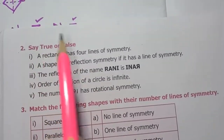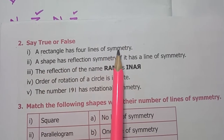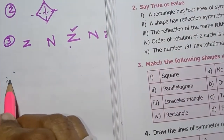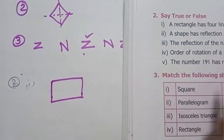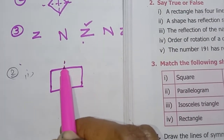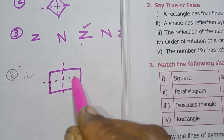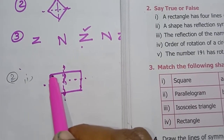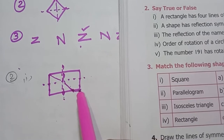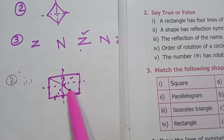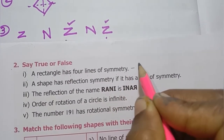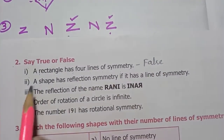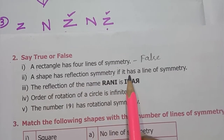Second section: say true or false. First one: a rectangle has four lines of symmetry. Looking at the rectangle — if you fold it, only two folds give equal halves, so it has 2 lines of symmetry, not 4. The answer is false.